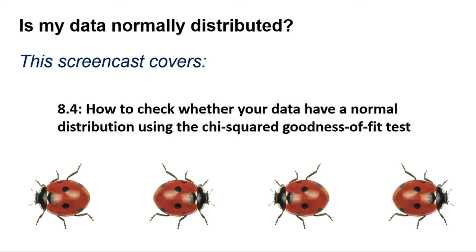If your data is normally distributed, then you can use a set of tests called parametric tests that are more powerful in discriminating significant from non-significant results. This is because the equation expects your data to conform to a pattern called the Gaussian or normal distribution, and so can make more accurate predictions.